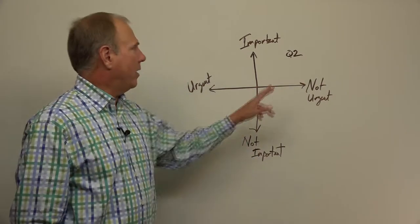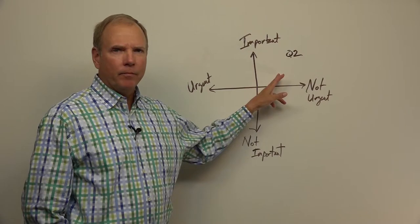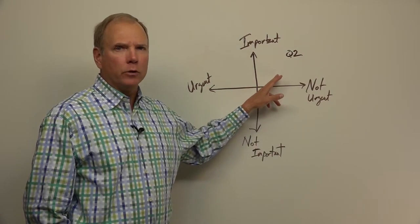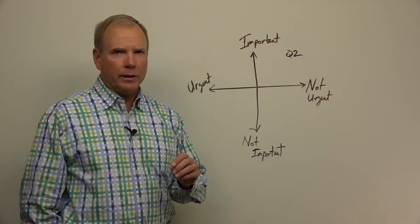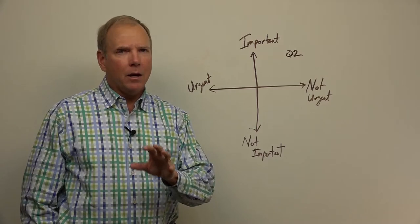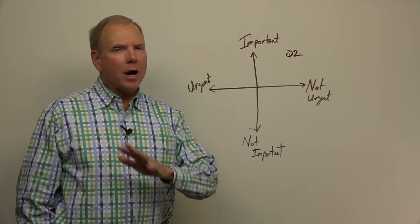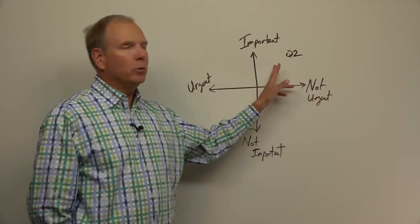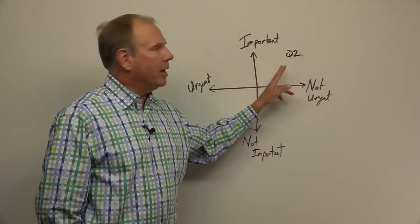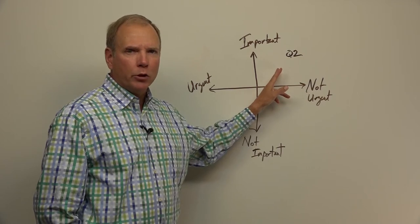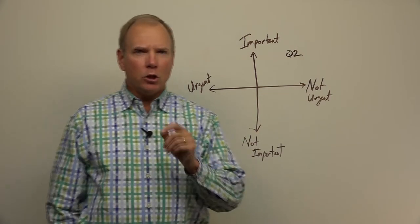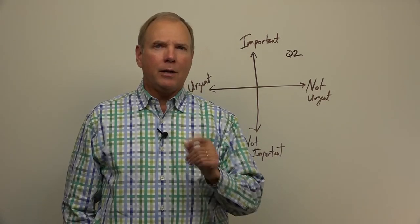So if you're going to take Covey's advice and Eisenhower's advice, you need to spend about 20 percent of your time in quadrant two planning for the future. You and your senior leaders, 20 percent of your time, that's one day per five-day week. You're not going to get there all at once. Maybe try to do a day a month or a day every other week at the beginning. But eventually you want to be spending about 20 percent of your time in quadrant two planning for the future and focusing on the things that you uniquely do well in your business.